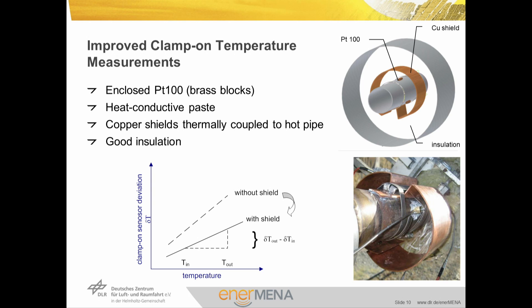This is particularly interesting for performance testing where the temperature difference between a cold inlet and a hotter outlet is most relevant. In terms of positioning, the sensors should be attached at an adequate distance from the contact points of the shields to avoid measuring potential effects of local cool-down of pipe surfaces due to the heat-conductive shields. Finally, the temperature sensor installation is filled with insulating mineral wool to prevent convection and housed in a wind-tight and rain-proof casing.